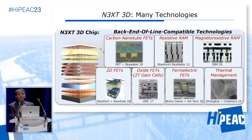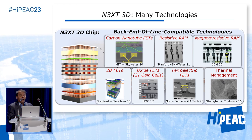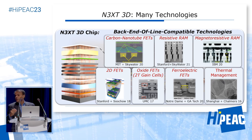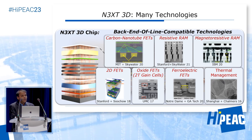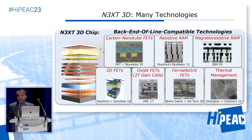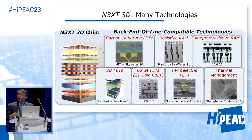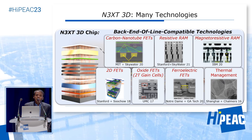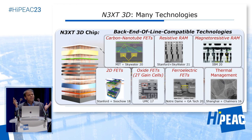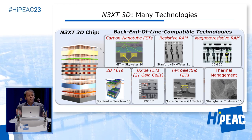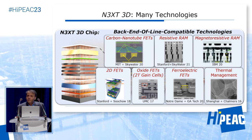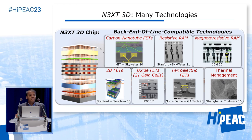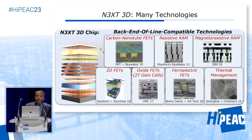Rather than being hand-wavy saying you can implement with many technologies, let me show some concrete examples — concrete implementations with specific technologies — to convince you that NEXT 3D is something you can build today. I'll start with logic technologies. My group at Stanford has spent significant resources and efforts on carbon nanotube field effect transistors. Carbon nanotubes are nano cylinders of graphene. If you exfoliate layers of graphite down to one layer — that would be graphene — and then roll that graphene into a hollow cylinder, that would be a carbon nanotube, with a typical diameter of roughly around one nanometer.